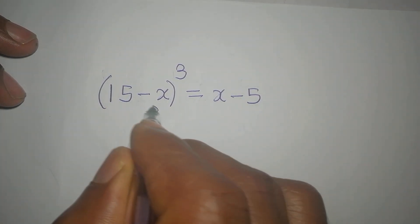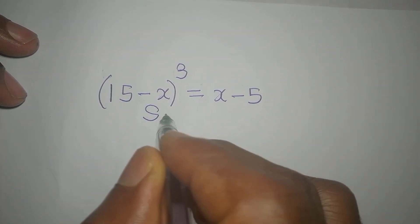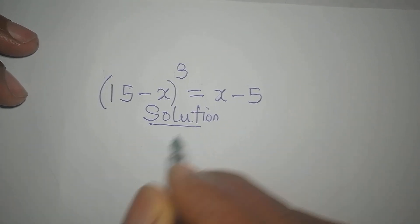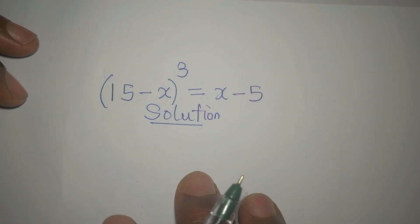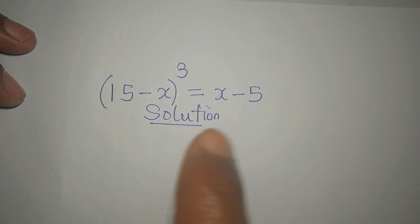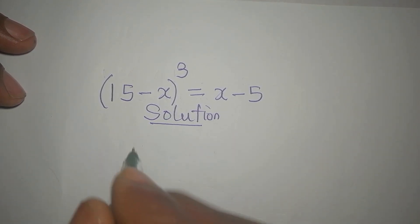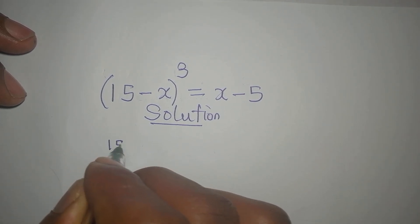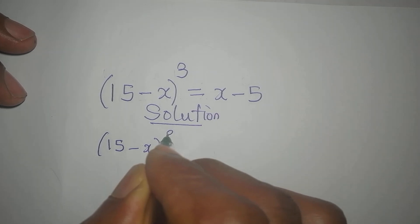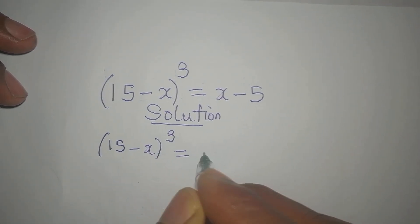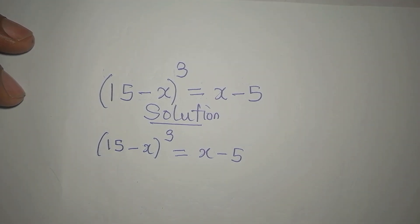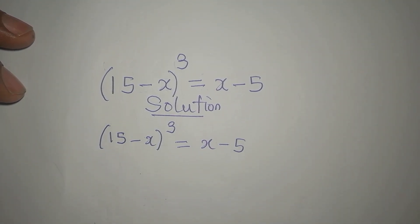Hello everyone, welcome to Foucault Mathematics. In this video we shall be providing the solution to this problem: 15 minus X to the power of 3 equals X minus 5. So let's begin.